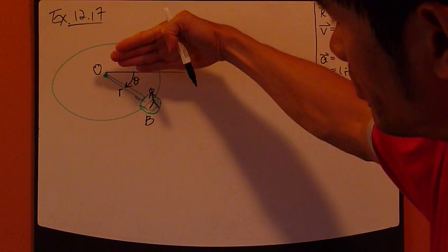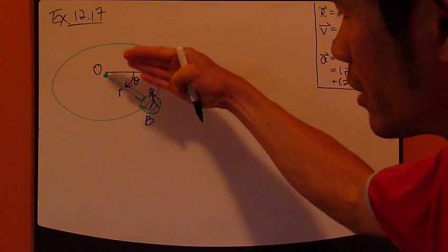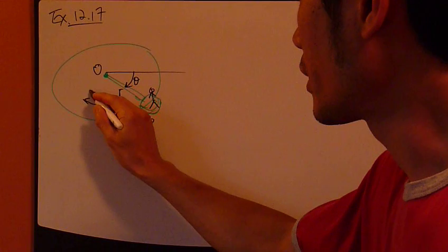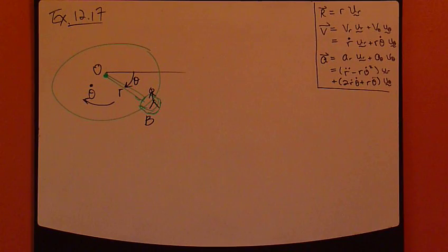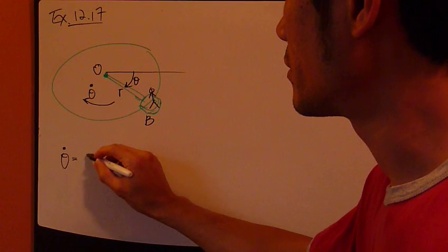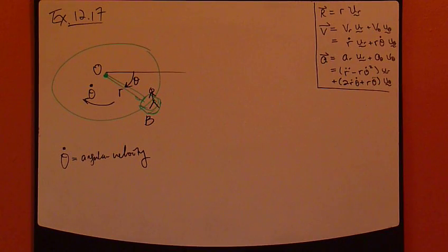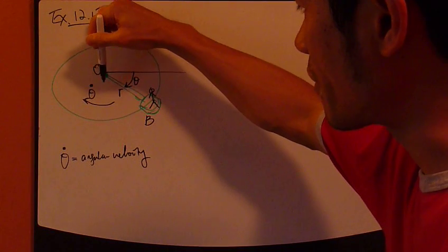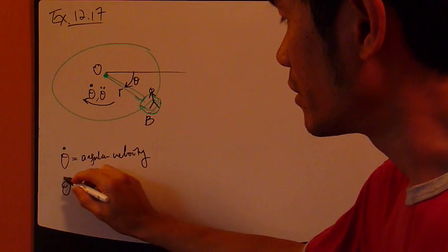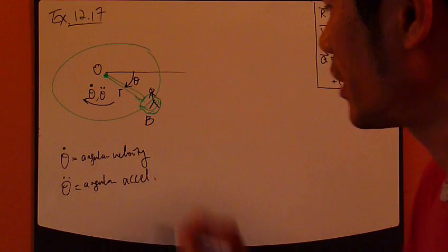Now, the position is measured by theta angle, and then the rate of change of theta is theta dot. So this is called angular velocity. And the rate of change of theta dot is called theta double dot. It's called angular acceleration.